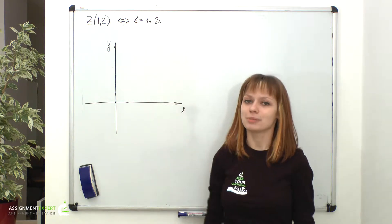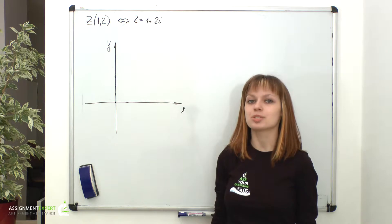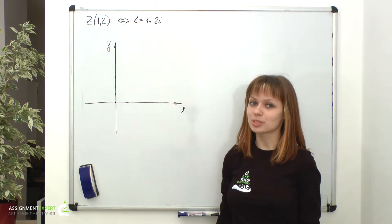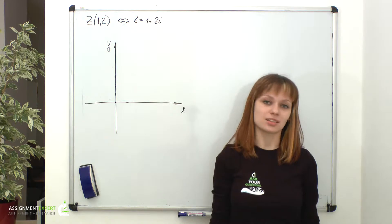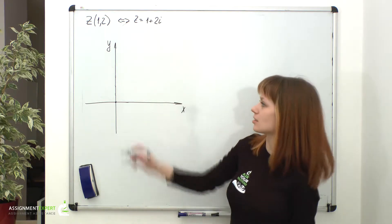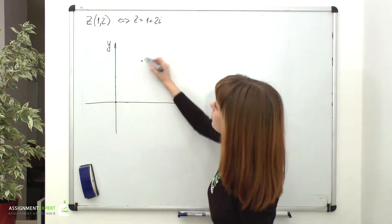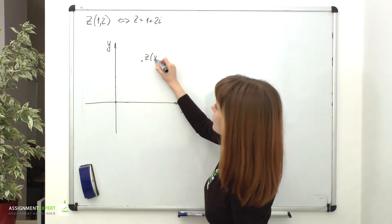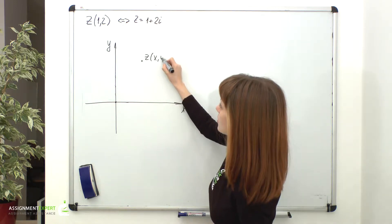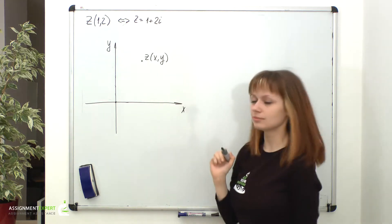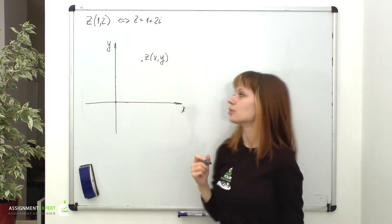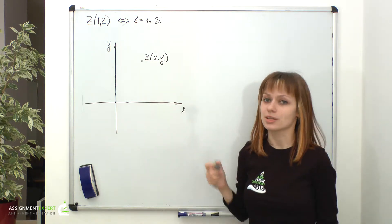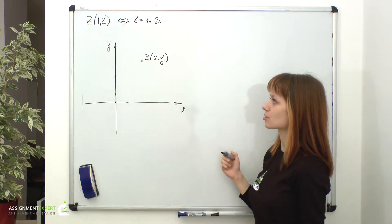As we know, in geometry pairs of numbers represent points on the coordinate plane. So what if we mark each complex number as a point on a coordinate plane? You're possibly wondering why there is no imaginary unit or imaginary numbers, as we're still talking about complex numbers.